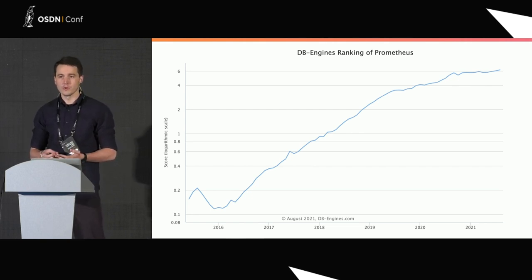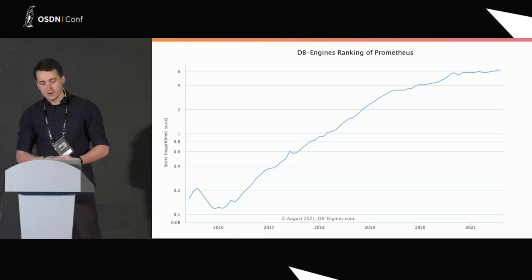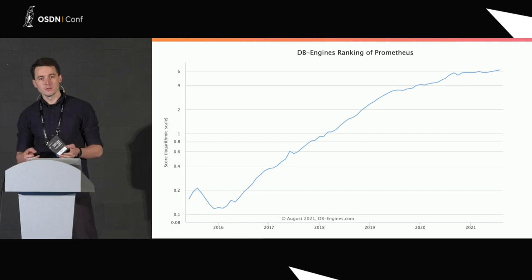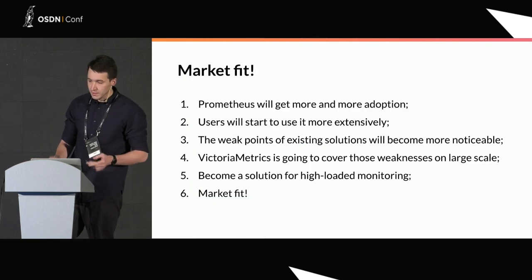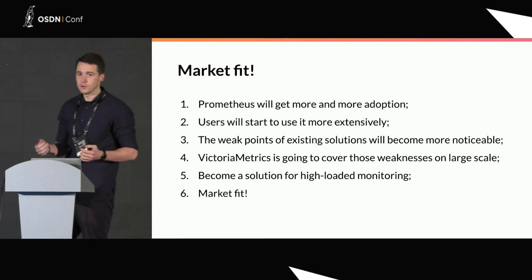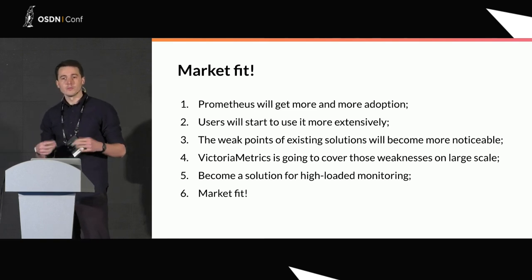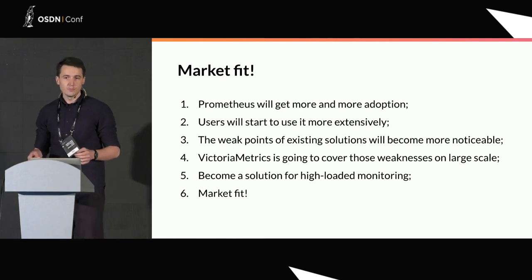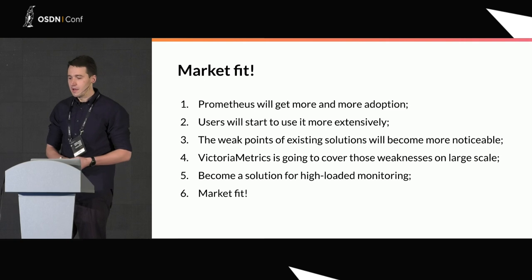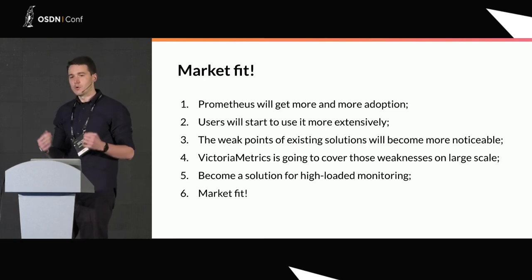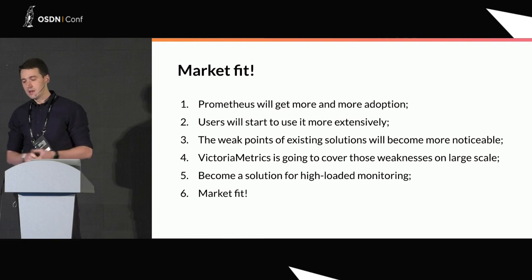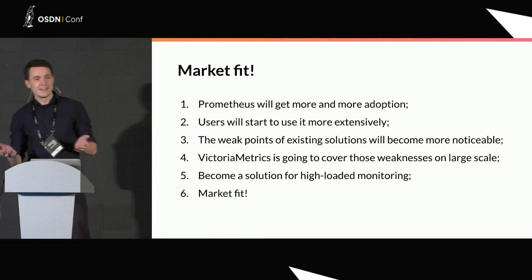What is even more important, we saw the weak spots of existing solutions, Prometheus included. The idea immediately came up that there could be a market fit. Follow my logic: Prometheus will get more and more adoption. Users will start to use it more extensively, put more data into it, more companies will adopt it. The weak points of Prometheus and existing solutions start to be more noticeable. And our solution, VictoriaMetrics, is going to cover those weak spots. Eventually, we will become the solution for high-loaded monitoring. That's the market fit.